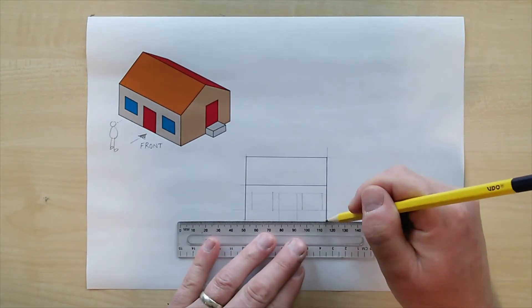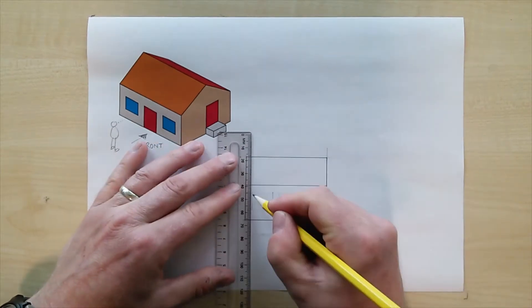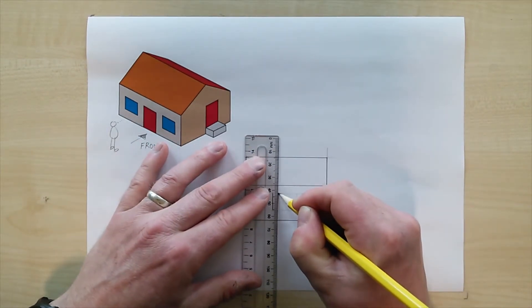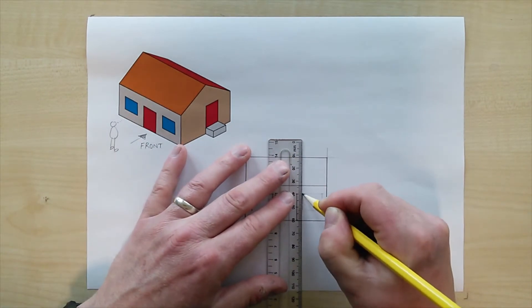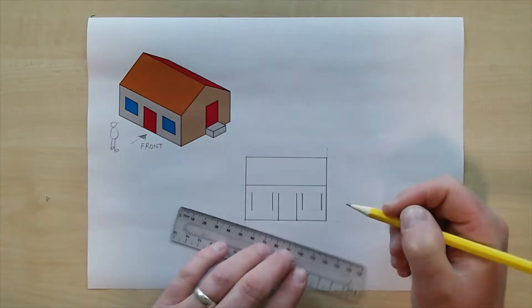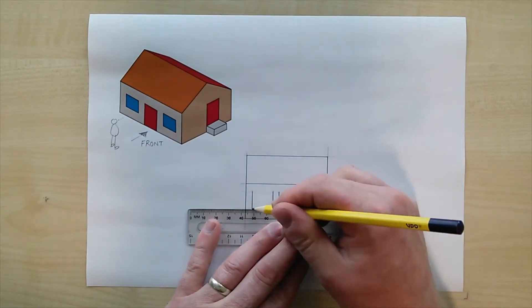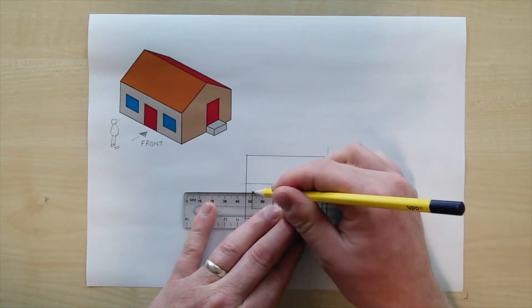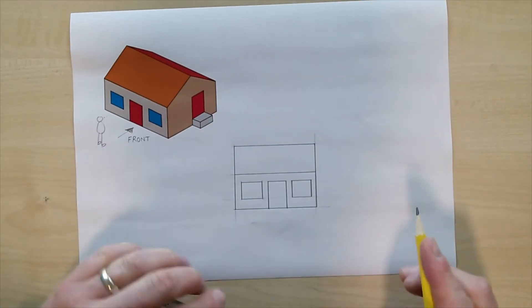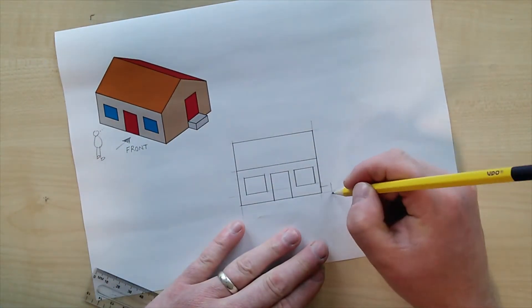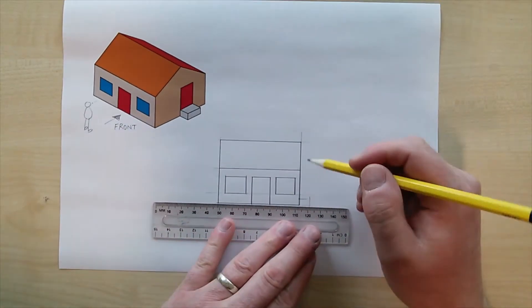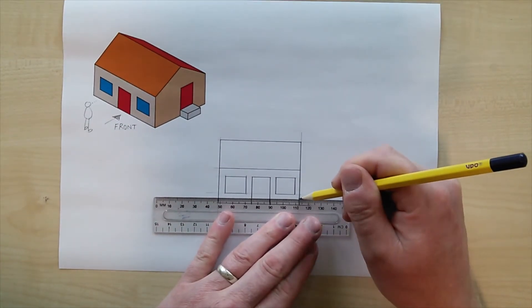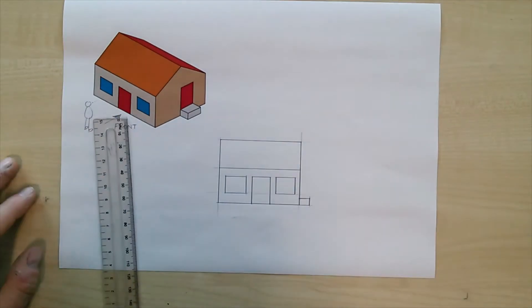Once I'm happy with the proportions I'll go ahead and go over those construction lines again but this time heavier, darker, blacker and create what's called outlines. Once this is done I've remembered that the chap at the front would be able to see that little step go out so again some construction lines go in first of all, I find the shape and the proportion and I darken that up into outlines.